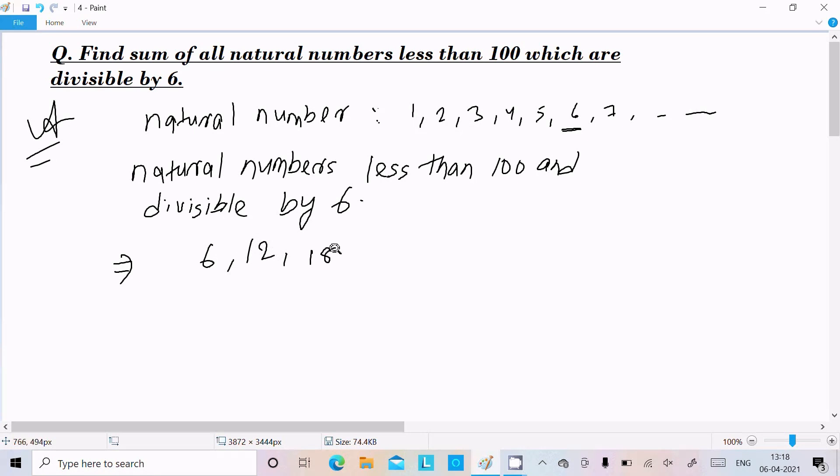Here after, 18 should be divisible and next, this continues on till 96. And 97 is not divisible, 98, 99 is also not divisible.